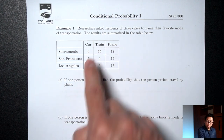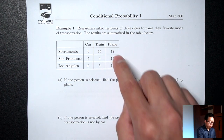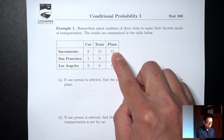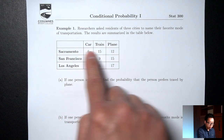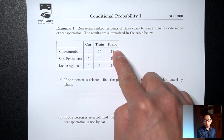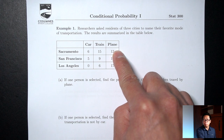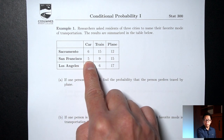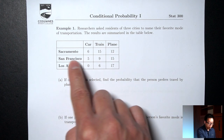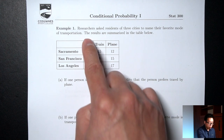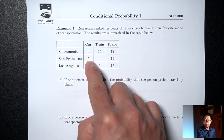The numbers here are frequencies — they're counting how many people. For instance, this 12 means that there are 12 people who are from Sacramento and at the same time they said plane was their favorite mode of transportation. This 5 means that there are 5 people from San Francisco who said car was their favorite mode of transportation.